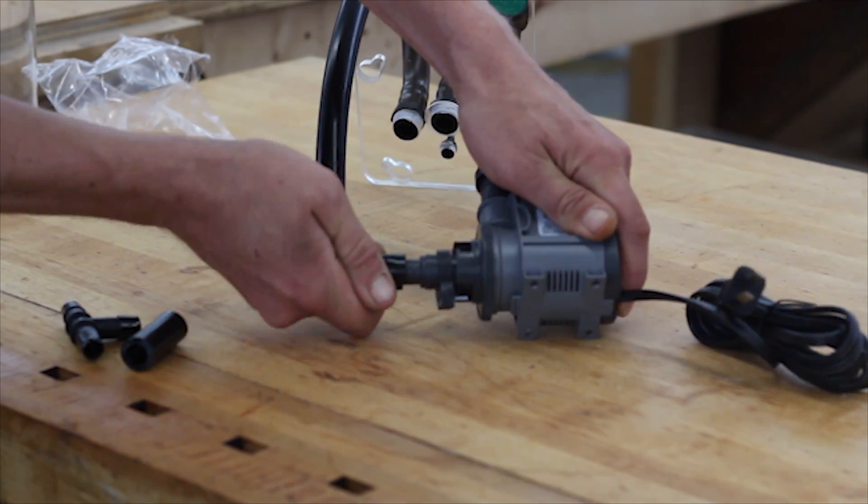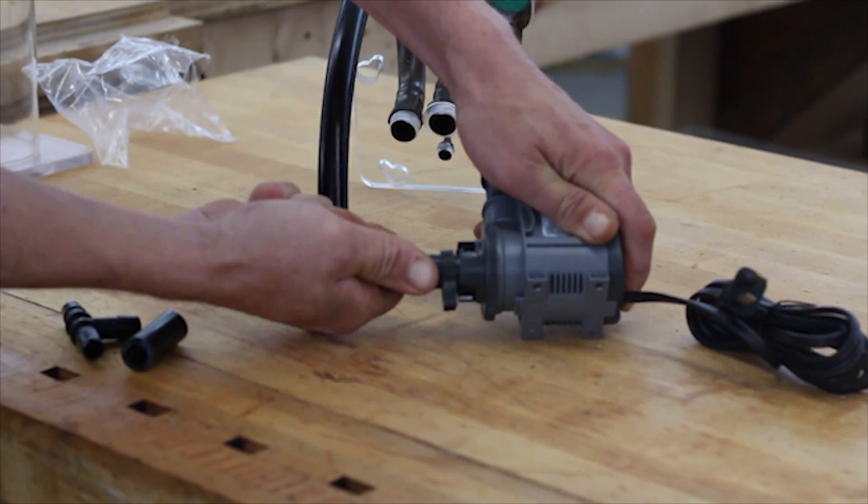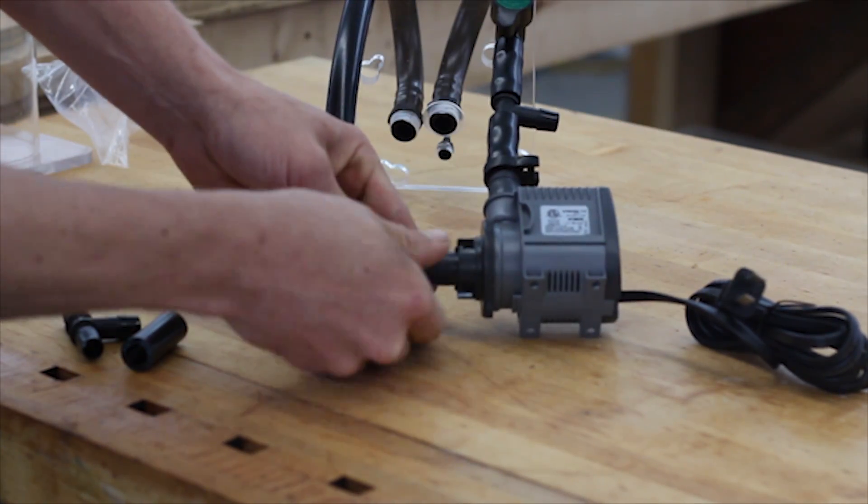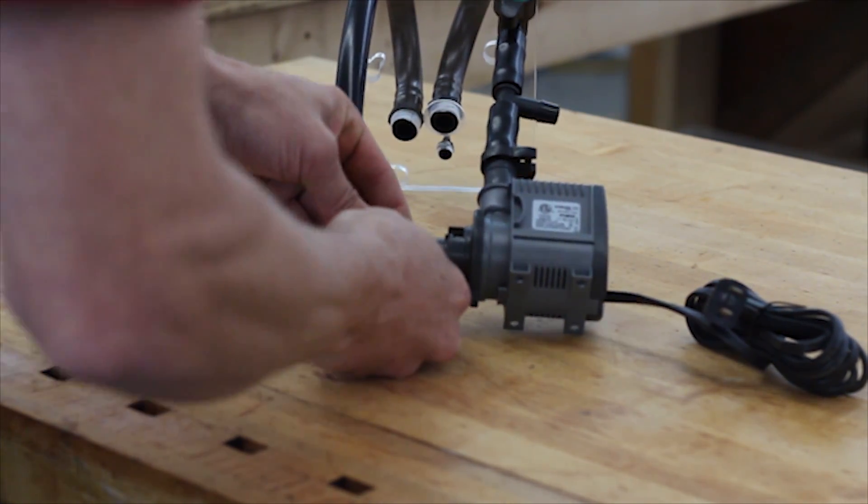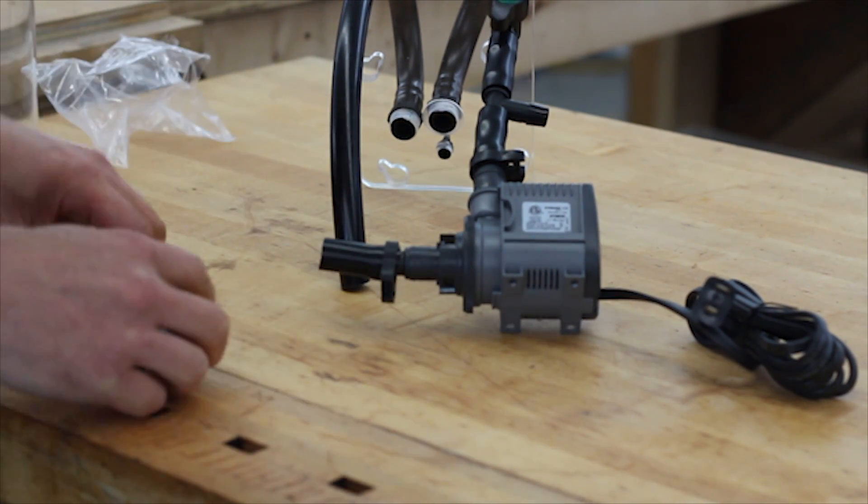Place the other clamp on the intake barb of the pump. Then add another short section of tubing, then the T, and make the connection to the long section of tube that comes through the support hole.